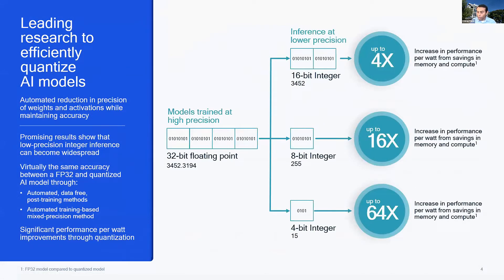Why worry about fixed-point inference and quantizing models? Typically, networks are trained in 32-bit floating point. When deploying on device, quantization is one clear choice — going to 8-bit quantization reduces model size by 4x. More importantly, with the right hardware accelerators designed to leverage this, you get significant performance benefits. Compared to 32-bit floating-point inference, you can get up to 16x improvement in performance with 8-bit inference. You can even go down to 4 bits for further energy and performance improvements. Fixed-point is the way to go for edge inference.